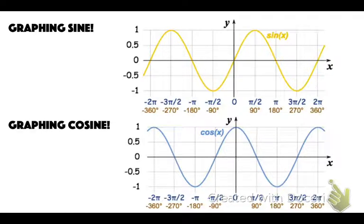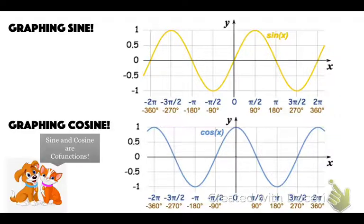Let's graph cosine. Notice that these graphs look very similar, though they're different colors. Really, cosine is just shifted sine — we've just shifted it to look like that. Which is why it's called sine and cosine — these are co-functions. You can get cosine by just shifting sine.